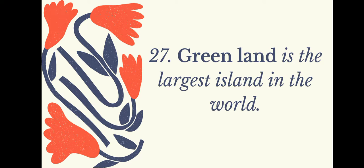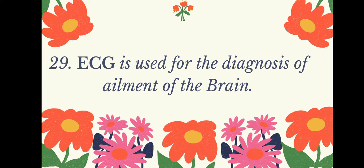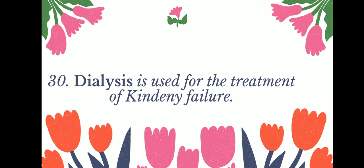Greenland is the largest island in the world. The deficiency of iron in the human diet causes anemia. ECG is used for the diagnosis of ailments of the brain. Dialysis is used for the treatment of kidney failure.